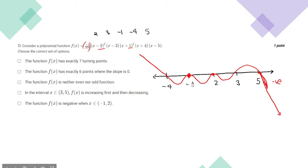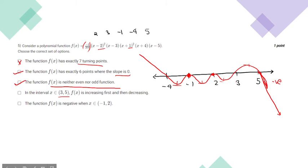Moving to the options: f(x) has exactly 7 turning points — counting gives 6 slope-zero points, so this is correct. The third statement says f(x) is neither even nor odd — that is correct. The fourth statement says in the interval 3 to 5, f(x) is increasing then decreasing — that is correct. The last statement says f(x) is negative when x belongs to minus 1 to 2 — that is also correct.